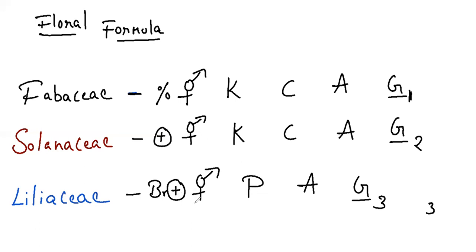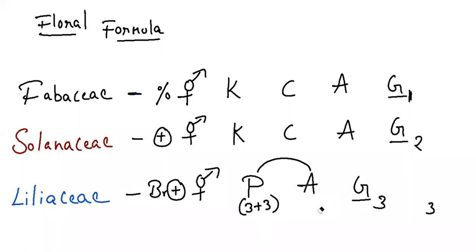For Liliaceae, the perianth has tepals in a three plus three arrangement, and this three plus three arrangement is fused — so we put a bracket. We have again three plus three stamens. The androecium is also fused with the perianth — tepals — so it's an epitepalous or epiphyllous condition. The gynoecium is tricarpellary, syncarpous, trilocular ovary. Perianth is fused and gynoecium is fused.